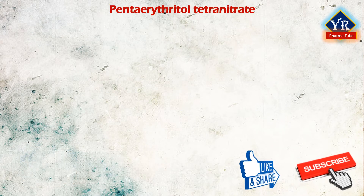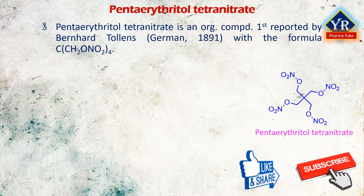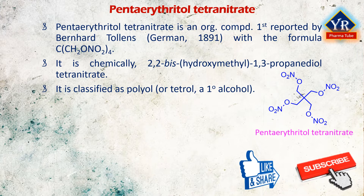The first drug is penta erythritol tetranitrate. Penta erythritol tetranitrate is an organic compound first reported by German chemist Bernhard Tollens in 1891, with the formula C(CH₂ONO₂)₄. It is chemically 2,2-bis(hydroxymethyl)-1,3-propanediol tetranitrate. It is classified as a polyol or tetrol, which is a primary alcohol that is white in solid form.